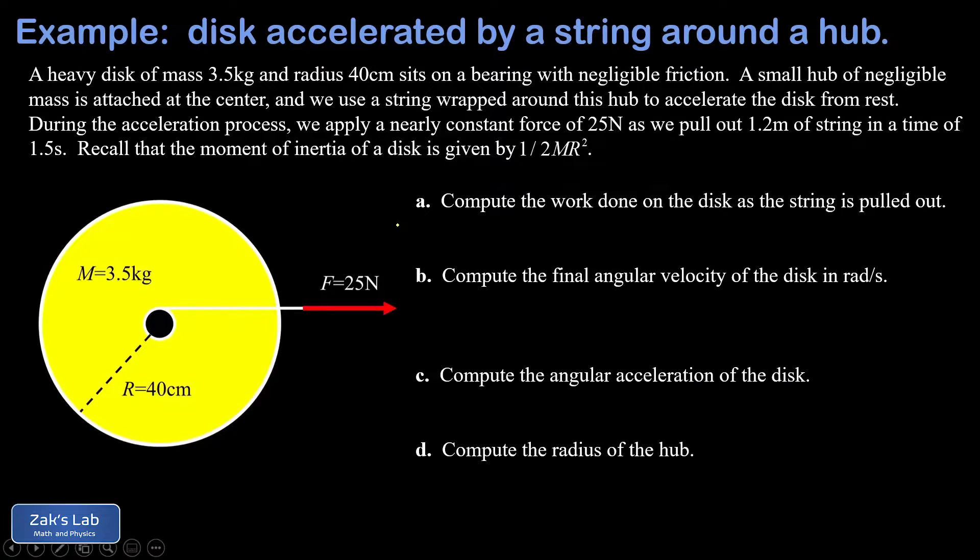In this problem, we're studying a heavy disk that's accelerated from rest by a string wrapped around a small hub that's glued on the center. We're given the specs on the disk. It's 3.5 kilograms. It has a radius of 40 centimeters.